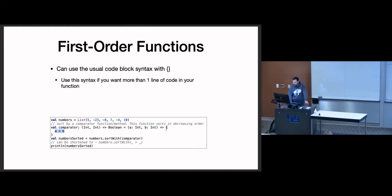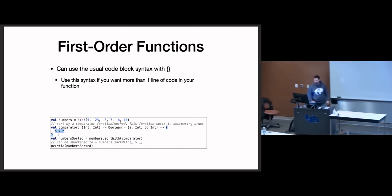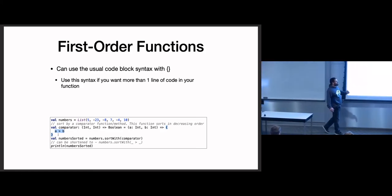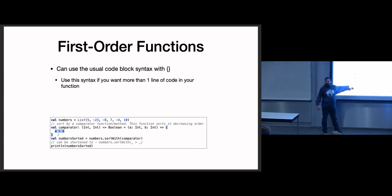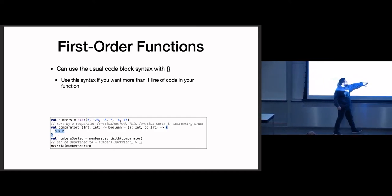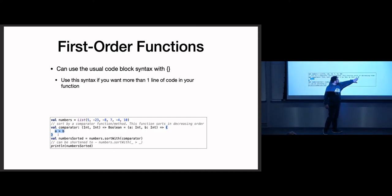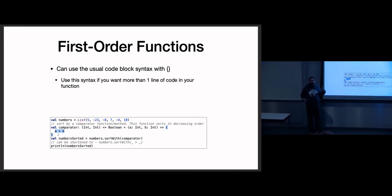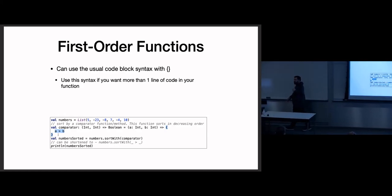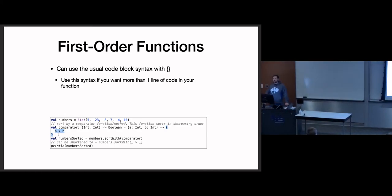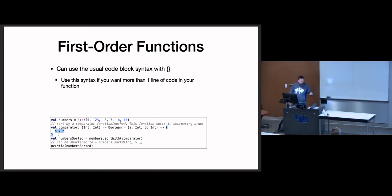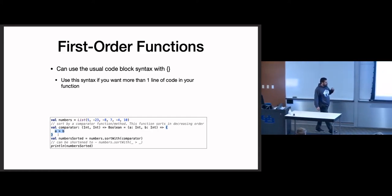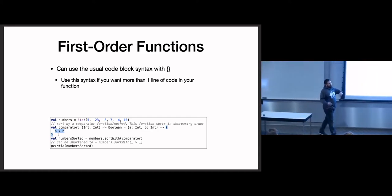We can use the same syntax as methods where we use braces if we want more room or want more than one line. You can say equals and give it a whole code block, and that function will have that whole definition. So if you want larger first-order functions — like you will when you get to the song cost function, the last part of task 1 — you're going to want to use braces because you have to write that whole cost function, which gets kind of lengthy.